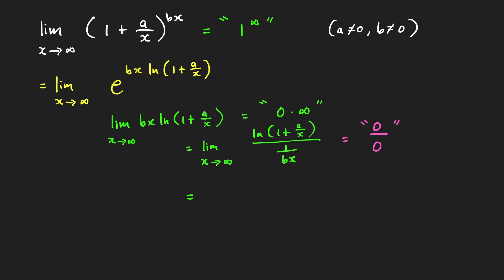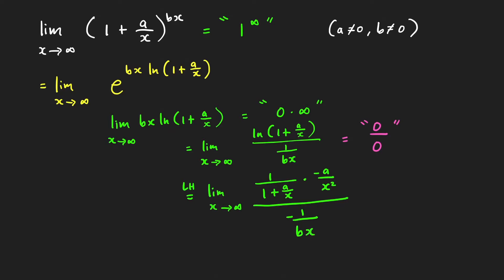Now we can apply L'Hôpital's rule. We get the limit as x approaches infinity of the derivative of the numerator, which is 1 over (1 plus a over x) times the derivative of (1 plus a over x), giving negative a over x squared. The derivative of the denominator 1 over bx is negative 1 over bx squared. We can cancel the x squared, replacing them by 1.